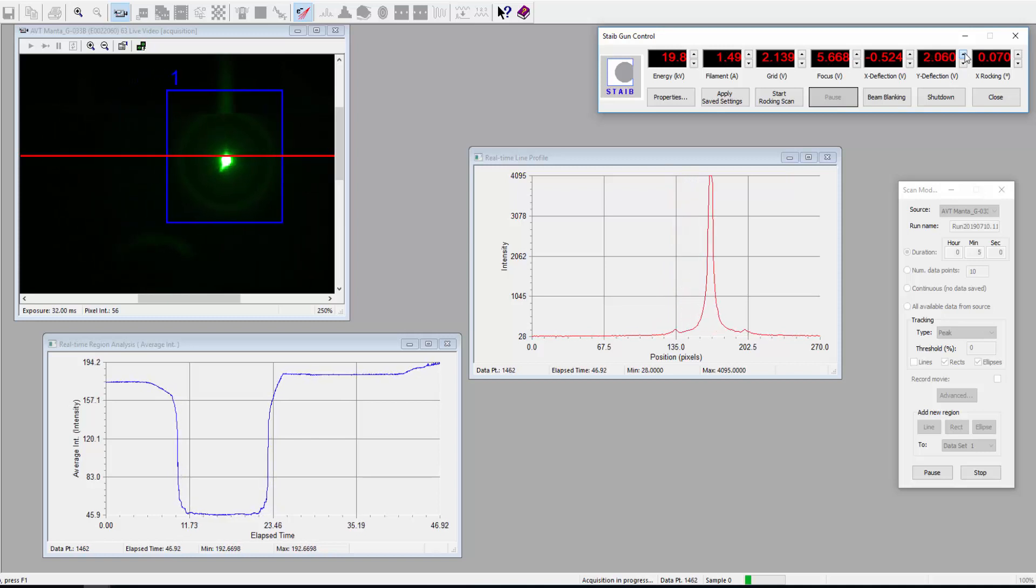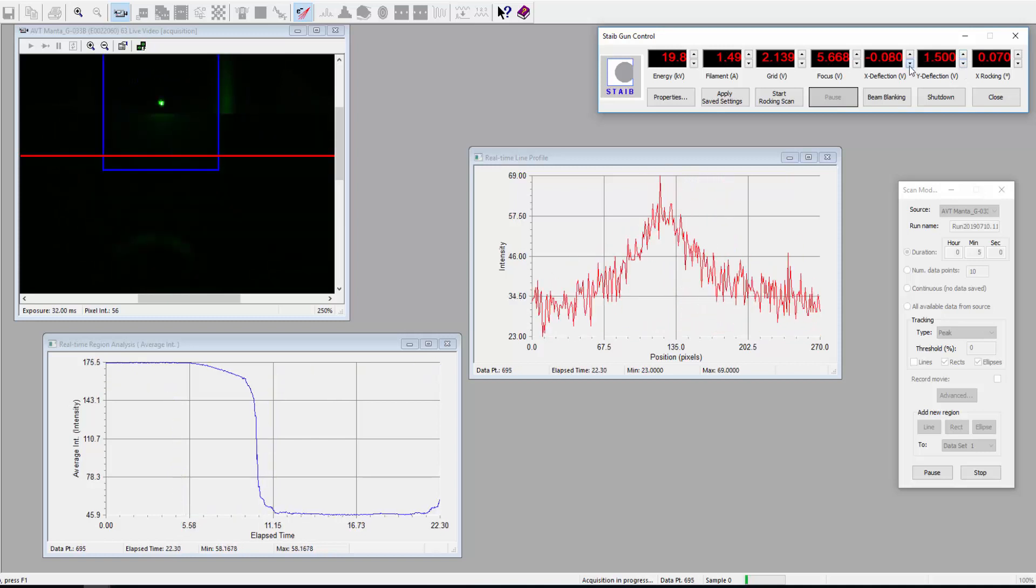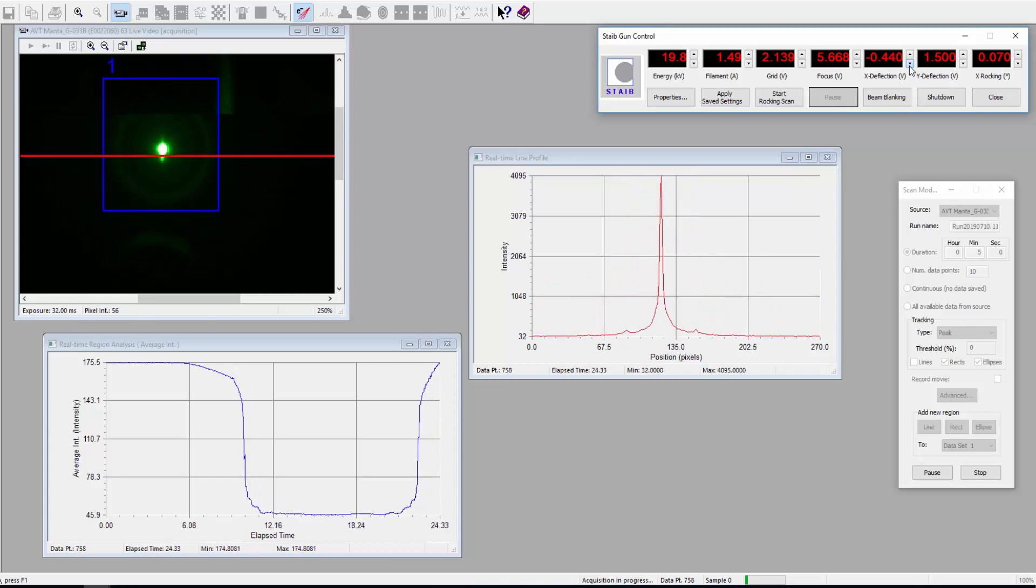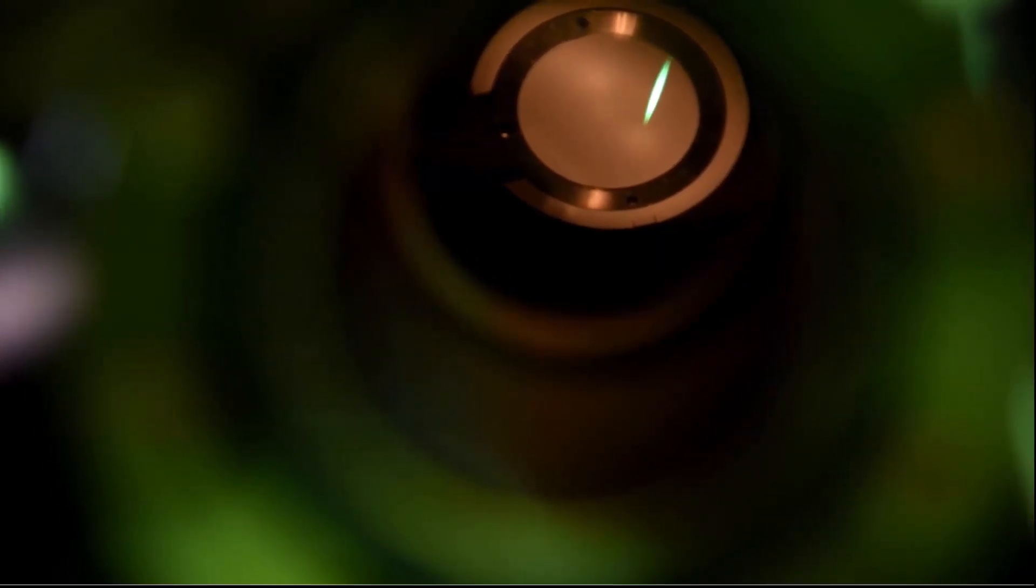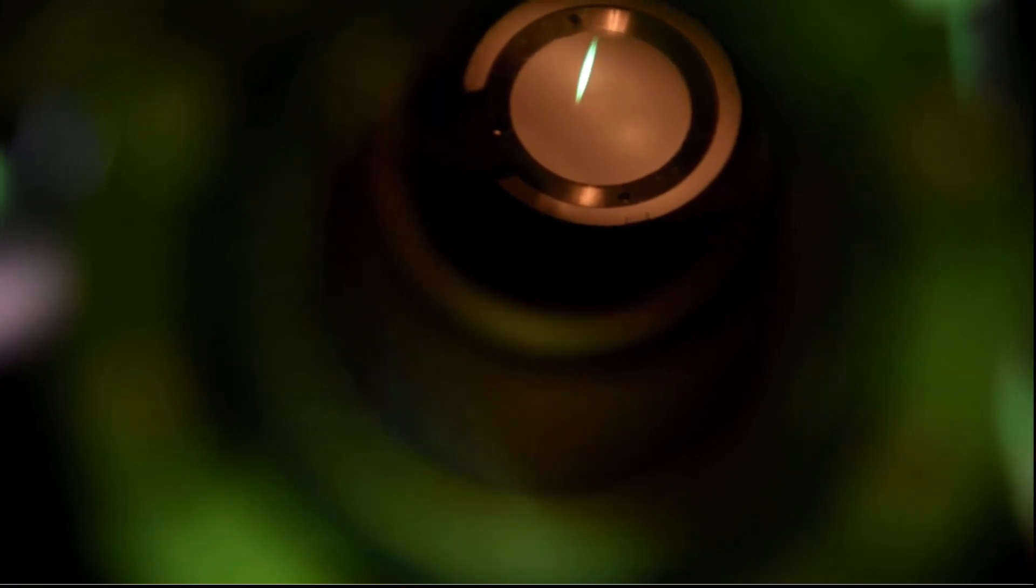Here you can see our KSA400 software being utilized to rock the electron beam to the proper alignment. It can be used to rock the beam along both the Y and X axes.